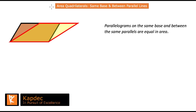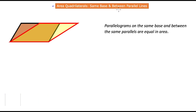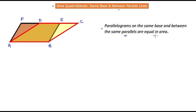Let us talk about the area of quadrilaterals with a specific condition: what if those quadrilaterals are on the same base and between parallel lines? We have two parallelograms — ABCD, marked with a red boundary, and ABEF — and our objective is to prove that parallelograms on the same base and between the same parallels are equal in area.